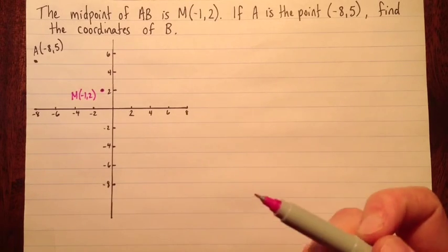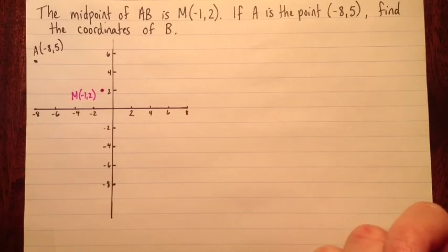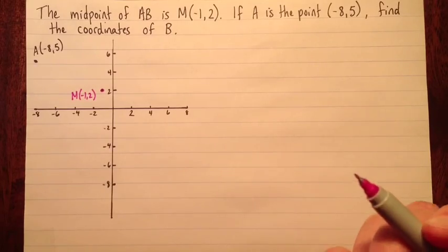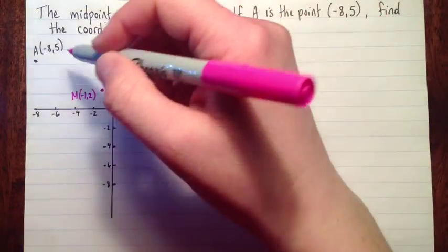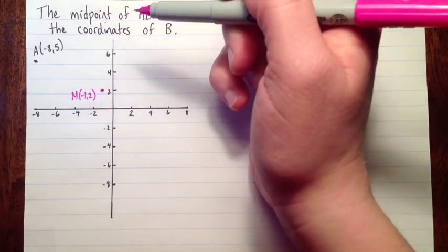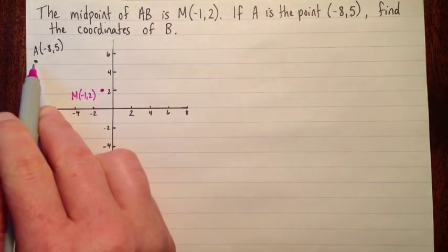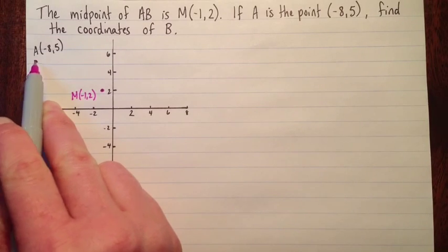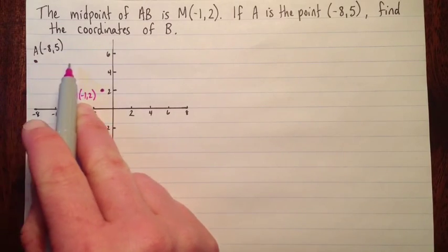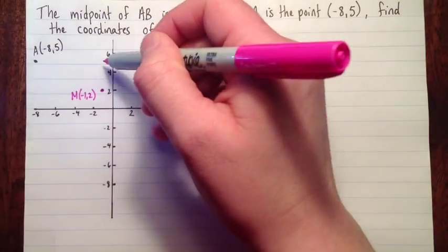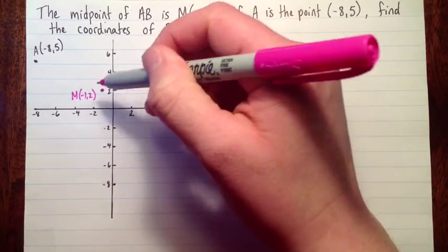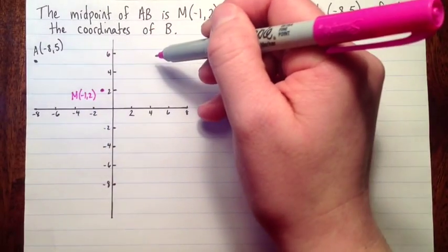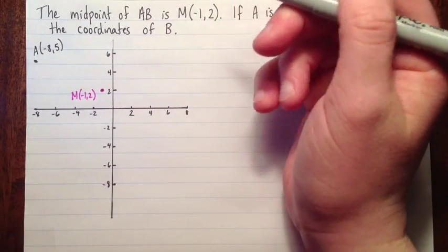Either way we do it, we're going to look at the x values and the y values separately. Let's start just by counting it out. I'll look at the x values first. So what I think is, how did I get in my x values from the point A up to the middle, and then I'm going to do that again, because the middle is in the middle so it should be symmetrical. I do it again and I should get to my B value.